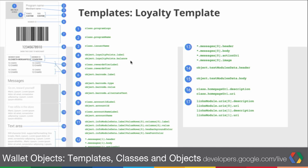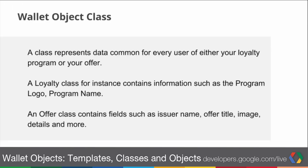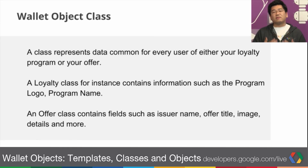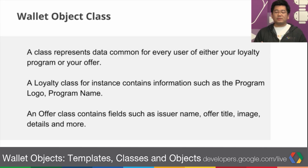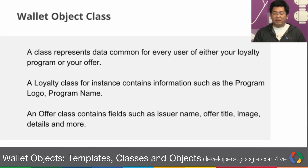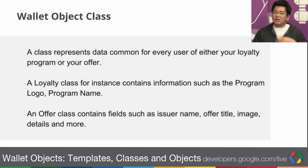Now let's dive into the stored data. A Wallet Objects class contains the common data for all users of a vertical. For example, in a loyalty class, we could contain common data such as the program image, colors, the program name, and labels common among all users. For an offer, we can store common information such as the merchant, fine print, details, and maybe an image.